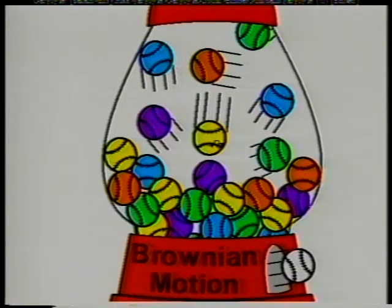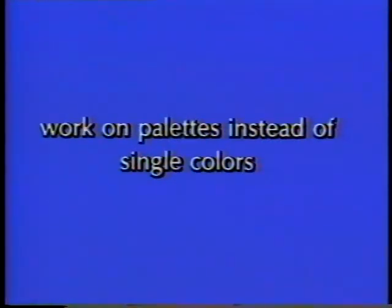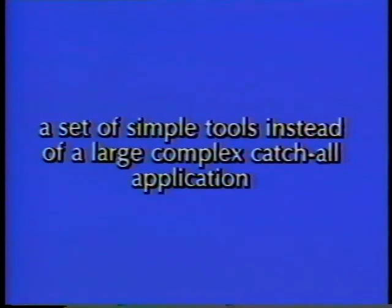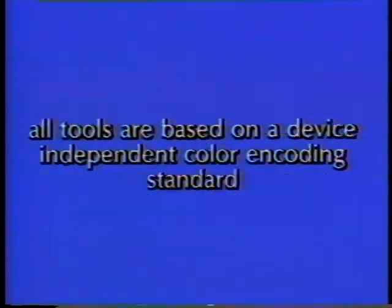You have now seen most of our color selection environment. We have shown that we first select colors and then define shapes. We work on palettes instead of single colors. We use a set of simple tools instead of a large, complex, catch-all application. For functional colors, we use a tool based on standard principles in the graphic arts, namely color theory. For reference colors, we use a database of palettes obtained by visual matching and measurement. If a final touch-up is necessary, all the colors in an illustration can be adjusted by manipulating points in a color space. And all tools are based on a device-independent color encoding standard.